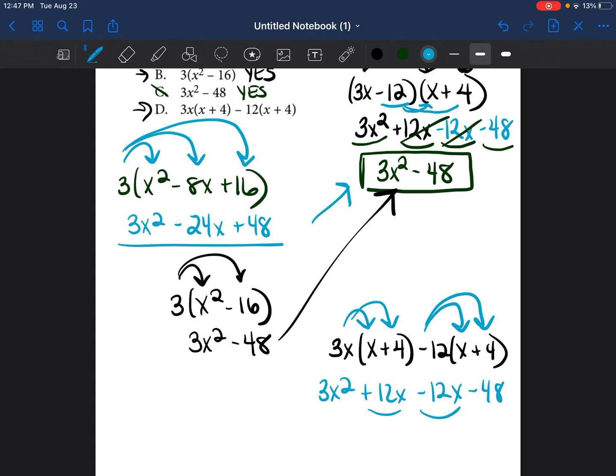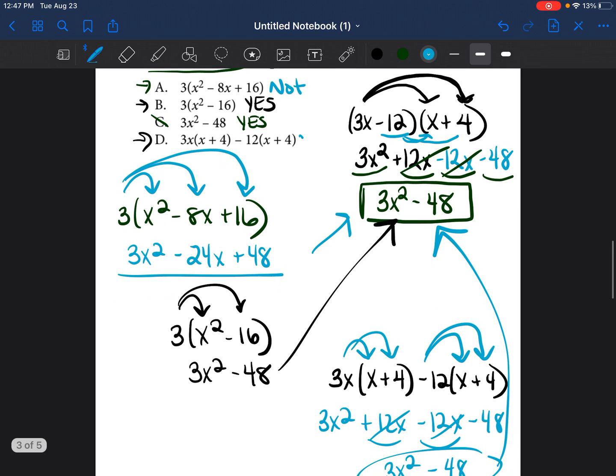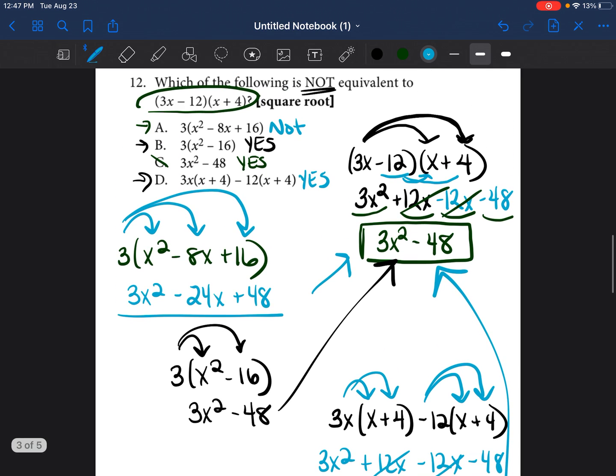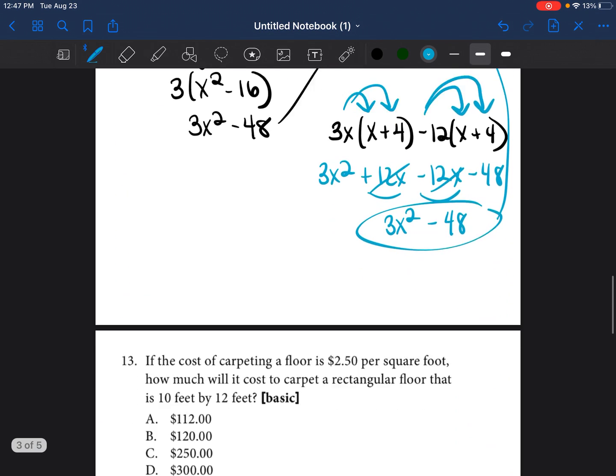These two are like terms. So you combine them. They cancel each other out. And you're left with 3x squared minus 48. And yes, that's the exact same here. So D is also equivalent. So the only one that is not equivalent would be choice A. All right, let's continue on.